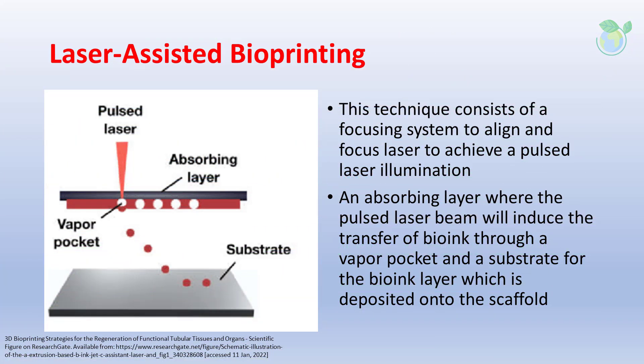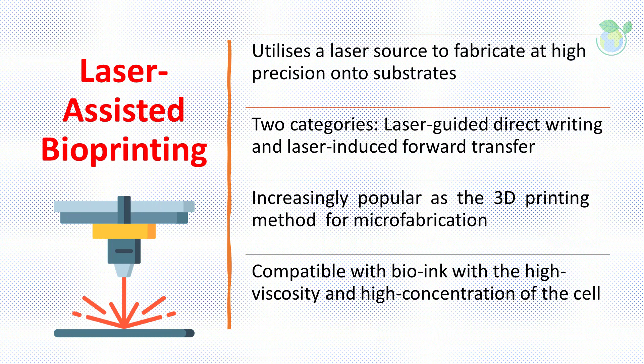The laser-assisted bioprinting technique consists of a focusing system to align and focus laser to achieve pulsed laser illumination, an absorbing layer where the pulsed laser beam induces the transfer of bioink through a vapor pocket, and a substrate for the bioink layer which is deposited onto the scaffold. This technique, which utilizes a laser source to fabricate at high precision onto substrates, is subdivided into two categories: laser-guided direct writing and laser-induced forward transfer methods. It is increasingly popular as a 3D printing method for microfabrication, with benefits of being compatible with high-viscosity bioink and high cell concentrations.